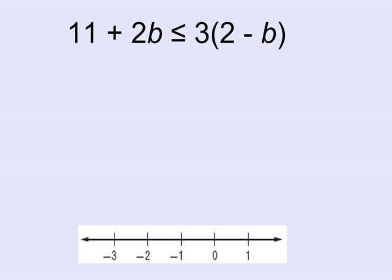Here's our problem. We have 11 plus 2b is less than or equal to 3 parentheses 2 minus b close parentheses. So we have the variable b on the left side of the inequality and on the right side of the inequality.